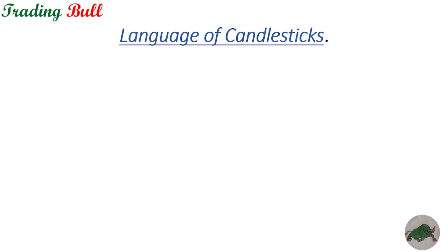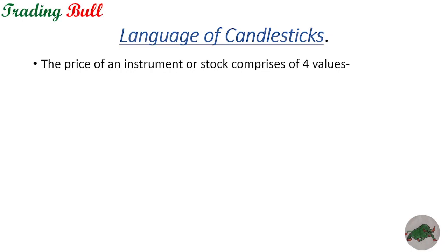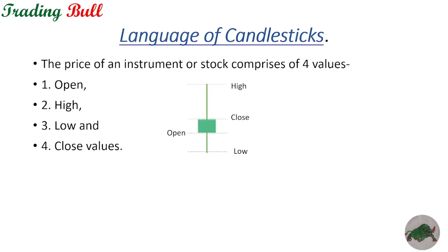Welcome back to the channel. Today we are going to learn about the language of candlesticks. The price of an instrument or stock comprises four values shown in a candlestick: open, high, low, and close. In the case of a green candle, the open is usually at a lower price and the close is at a higher price, and the price between the open and close is shown as the body.